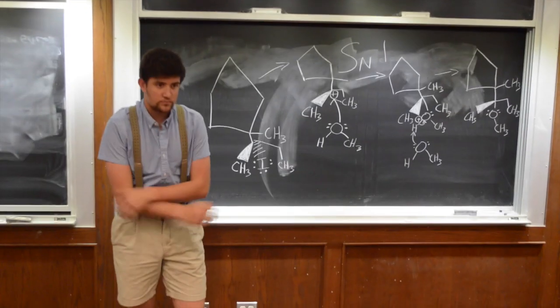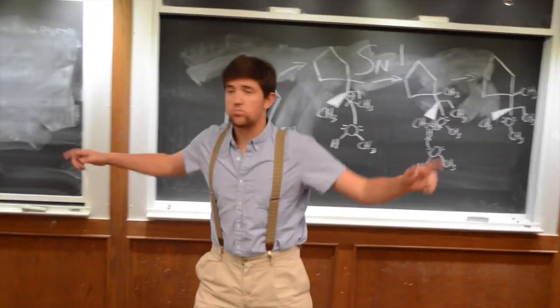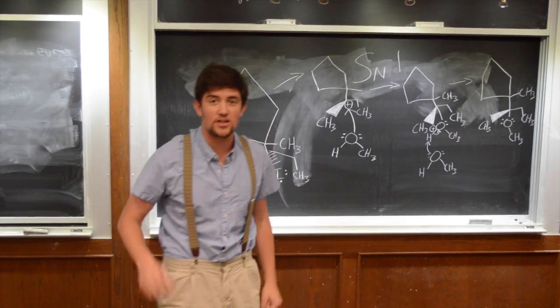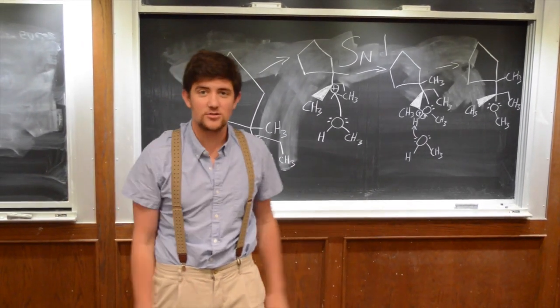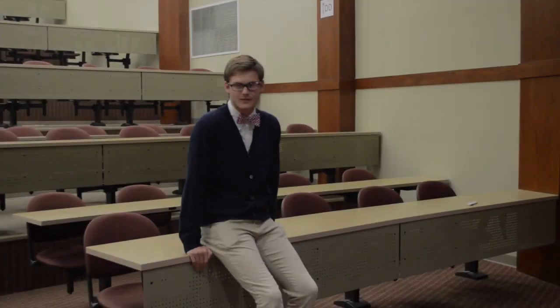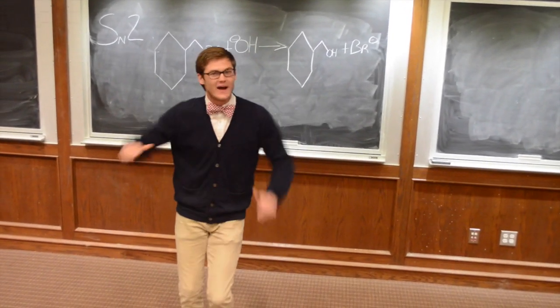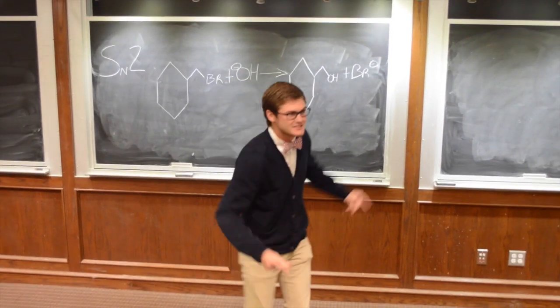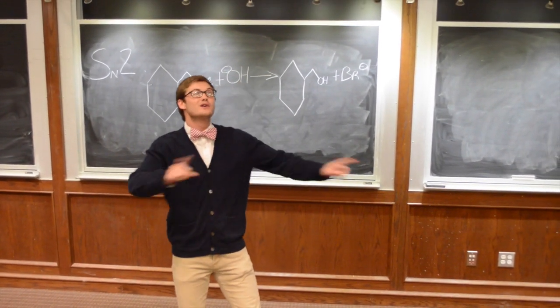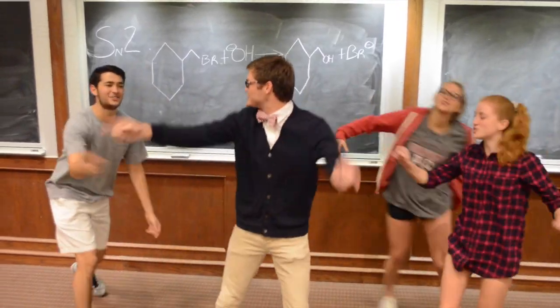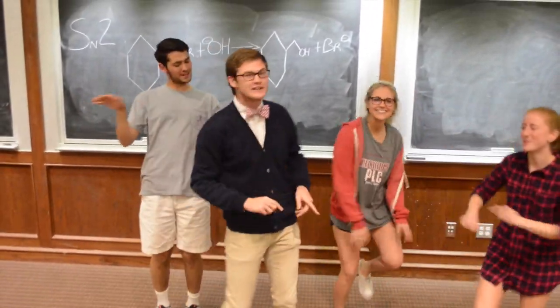Is that all you got? SN1 is fun — racemic products are what you're gonna get. Polar protic solvents — those work best. Everybody, say those steps. This is SN1. Stop — I'm about to shut it down. Everybody in the classroom right now, if your heads are down, wake up. Because when you do SN2 reactions, we don't need no rearrangements. No rearrangements — SN2 reactions!